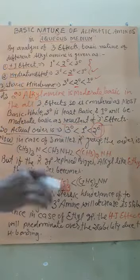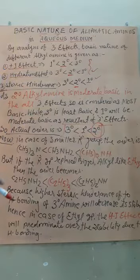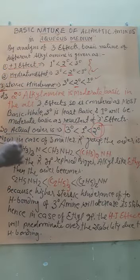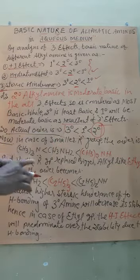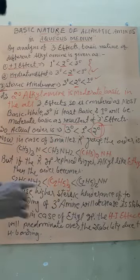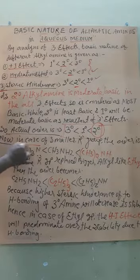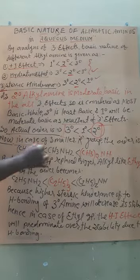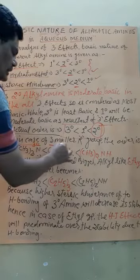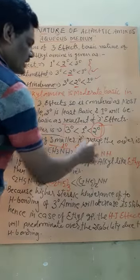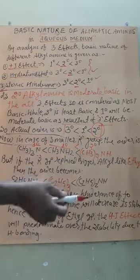The tertiary amine will be weakest, primary will be moderate, and the secondary will be highest or strongest basic in nature. Now if we replace the R group by methyl or ethyl, in this case tertiary amine is three degree, primary amine is one degree, and the most basic will be secondary amine.